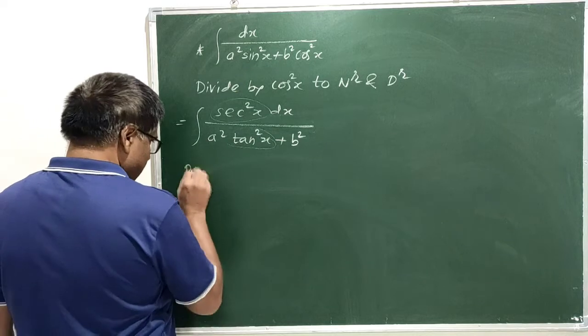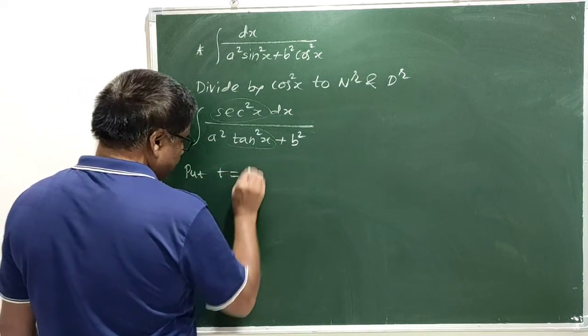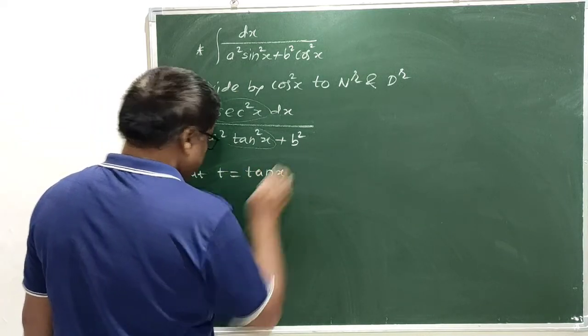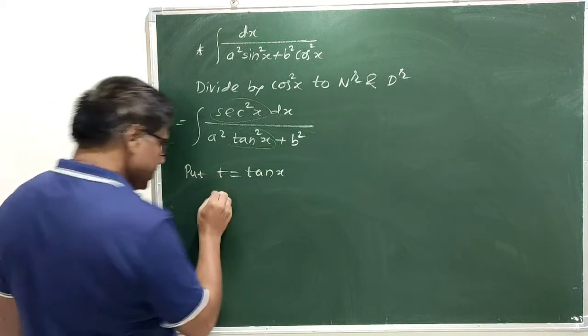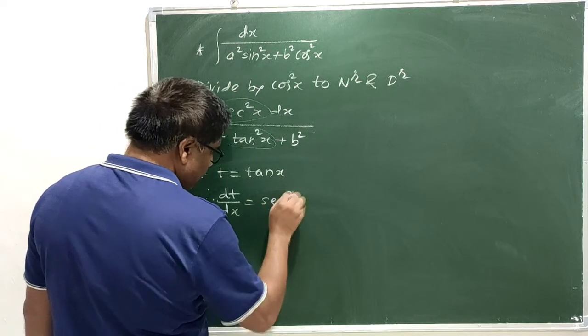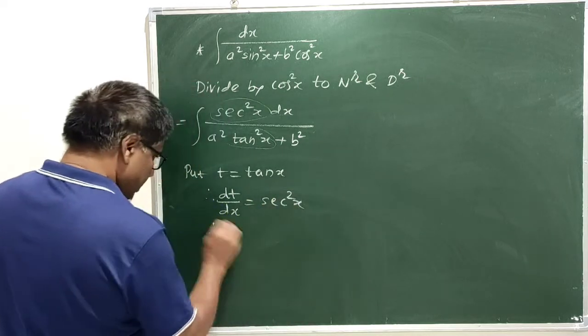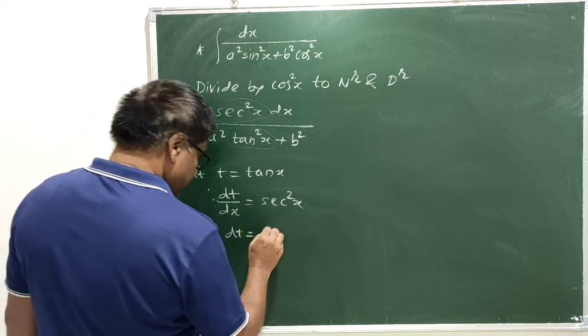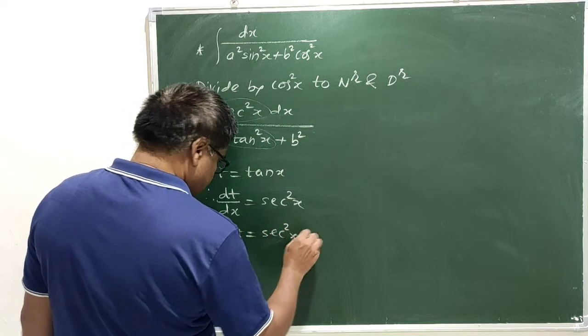Our substitution is put t is equal to tan x. Now, let us differentiate this t with respect to x. Therefore, dt by dx is equal to sec square x. Therefore, dt is equal to sec square x dx.